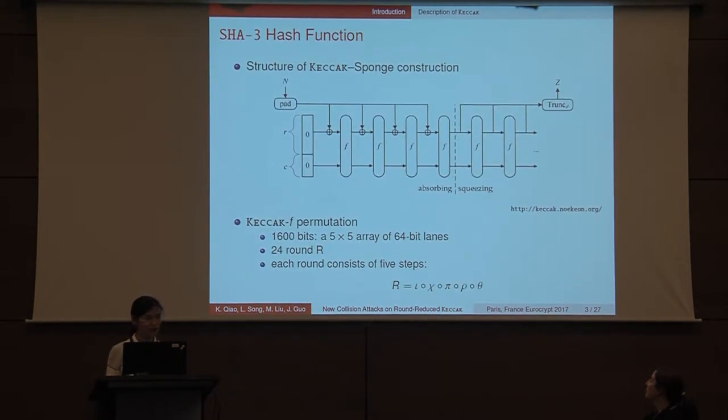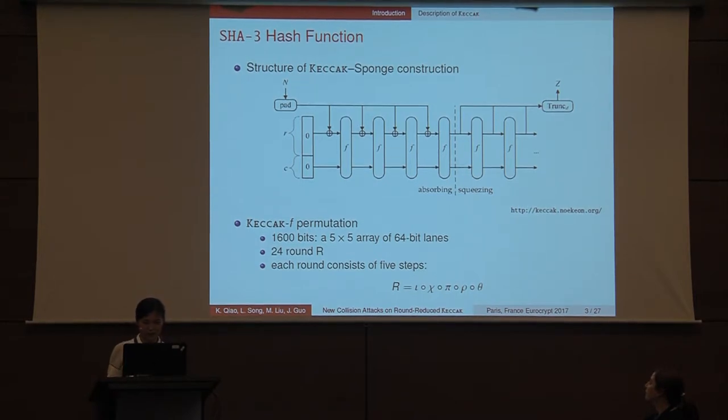Keccak is also known as the winner of SHA-3 competition. It applies the sponge construction. The Keccak-f permutation is an iterated operation on a 5x5 array of 64-bit length. Note that the last c bits of the initial state are set to zero, so it is uncontrollable by the attackers.